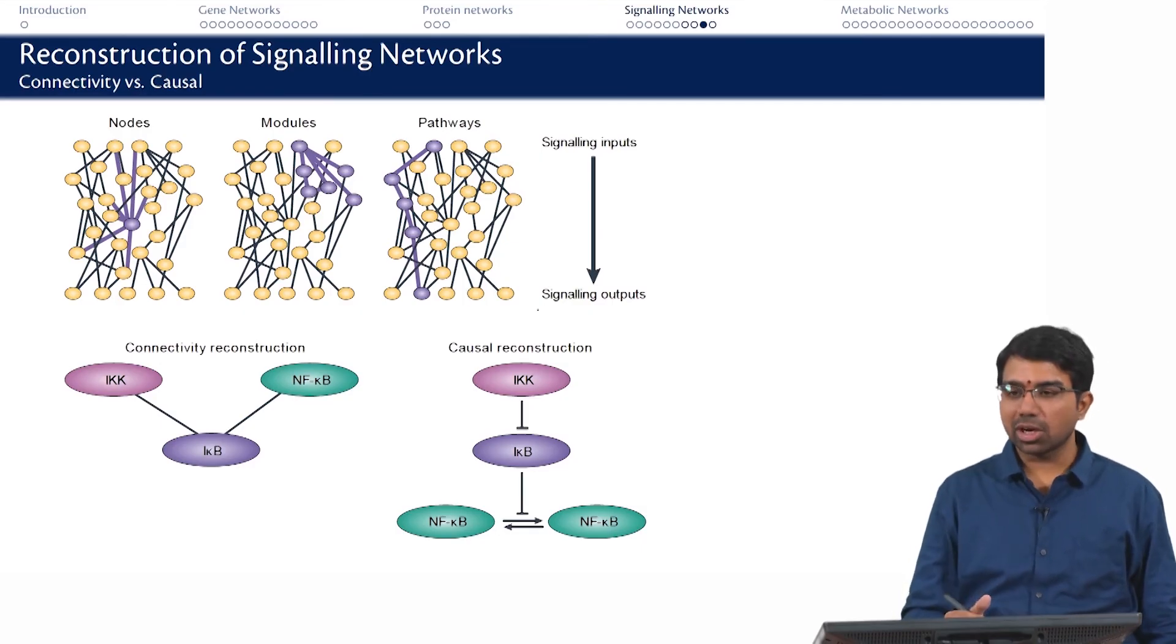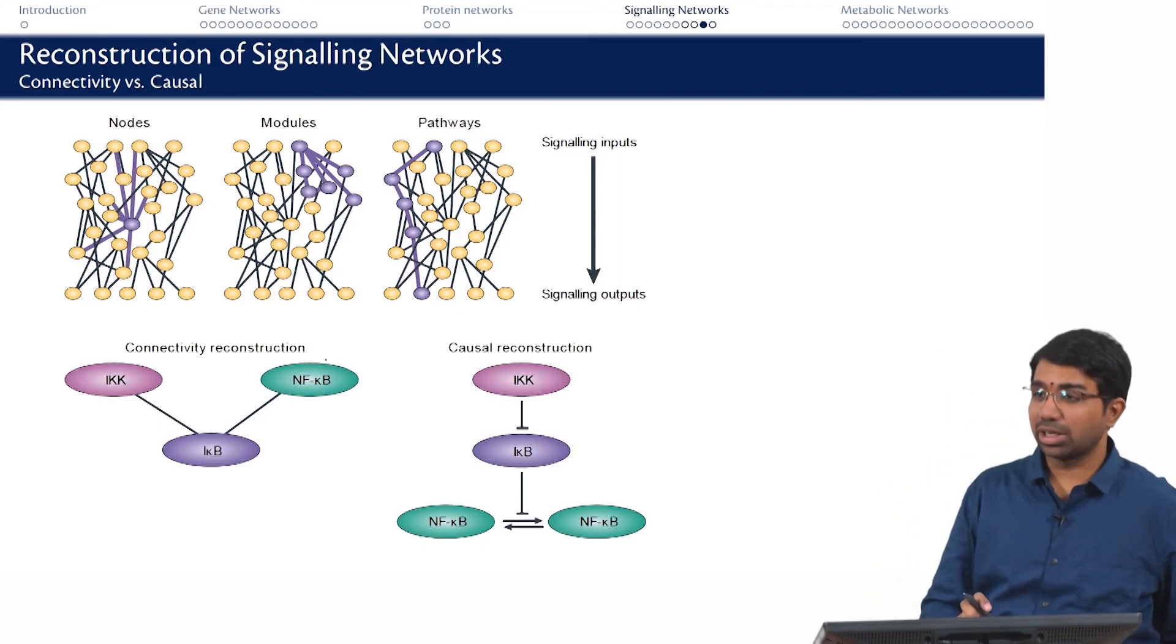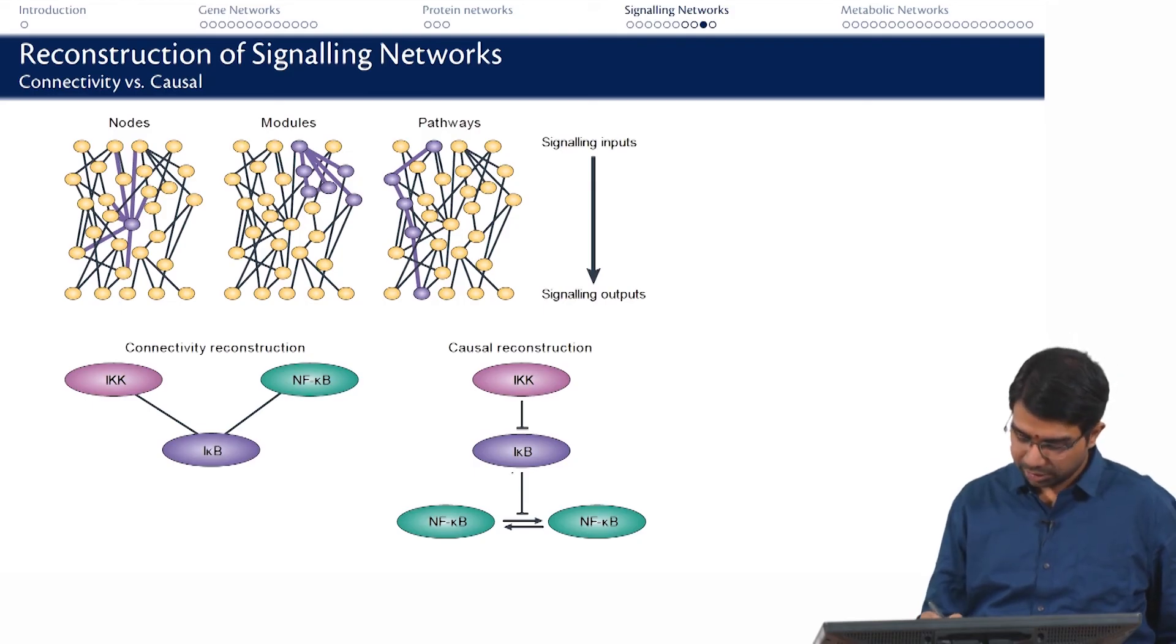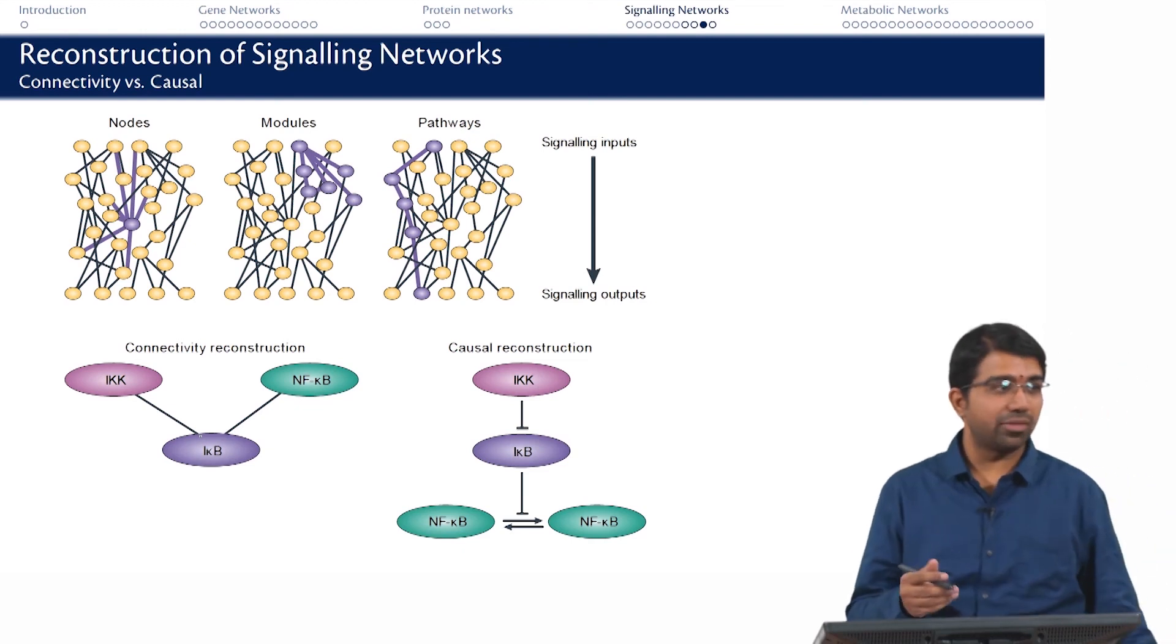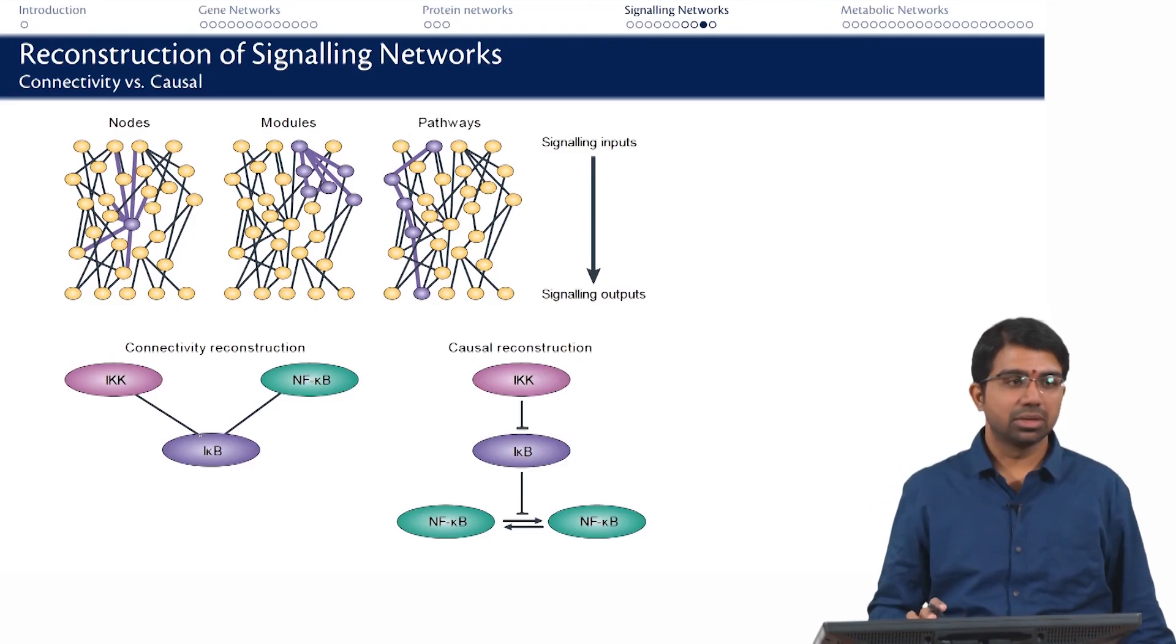You can have different types of reconstruction. You can have a simple connectivity based reconstruction. This means that there is an edge in the adjacency matrix but you do not know the sign of the edge. You may know the sign in which case you get more information. You have IKK inhibits IκB which then inhibits this NF-κB switching on and off. This is more detailed than what you have here. It depends upon the level at which you have data, it depends upon what is the question you want to ask of the signaling network.